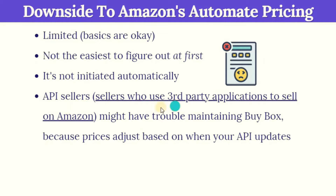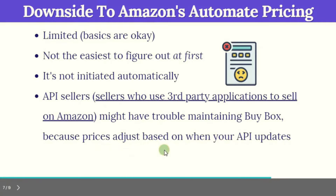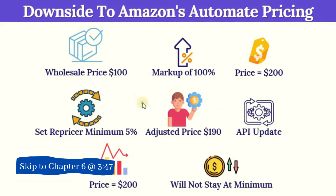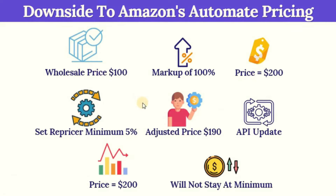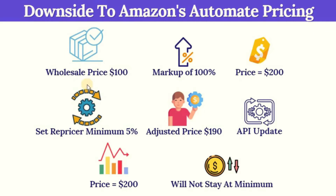This is important for API sellers — those who use third-party applications to sell on Amazon might have trouble maintaining the buy box because prices adjust based on when your API updates. For example, if your distributor sells you something for $100 and your software automatically marks it up 100%, the price listed on Amazon is $200. You can set your repricer to be 5% below your listed price, adjusting it to $190.